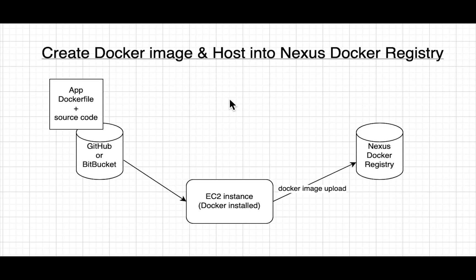In this tutorial, we'll learn how to create a Docker image and then host it in a Nexus Docker registry. In a previous video we learned how to host Docker images in Amazon ECR; you can also use Nexus, Artifactory, or Docker Hub. There are many ways to host Docker images, but in this particular lab we'll use Nexus to store the Docker registry.